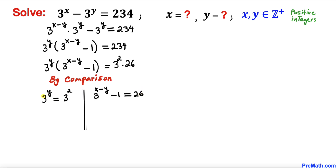Since the bases 3 are the same on both sides of the first equation, we can equate their exponents. Therefore y equals 2.